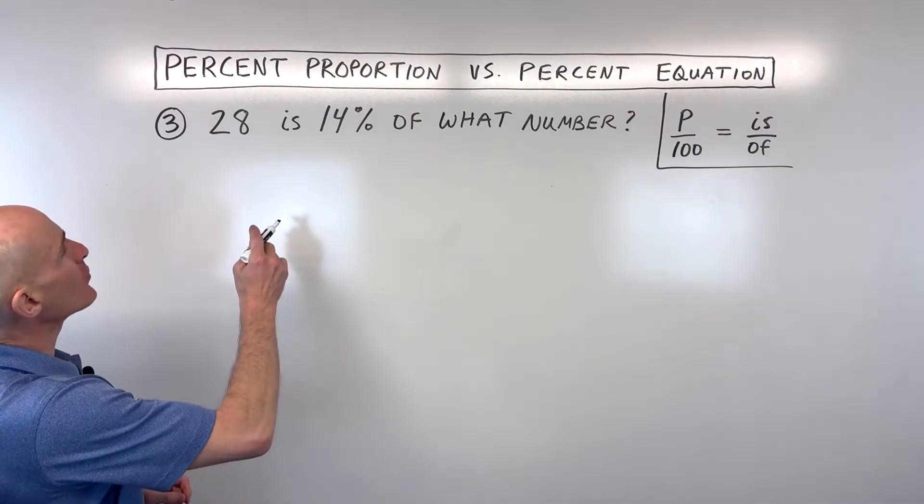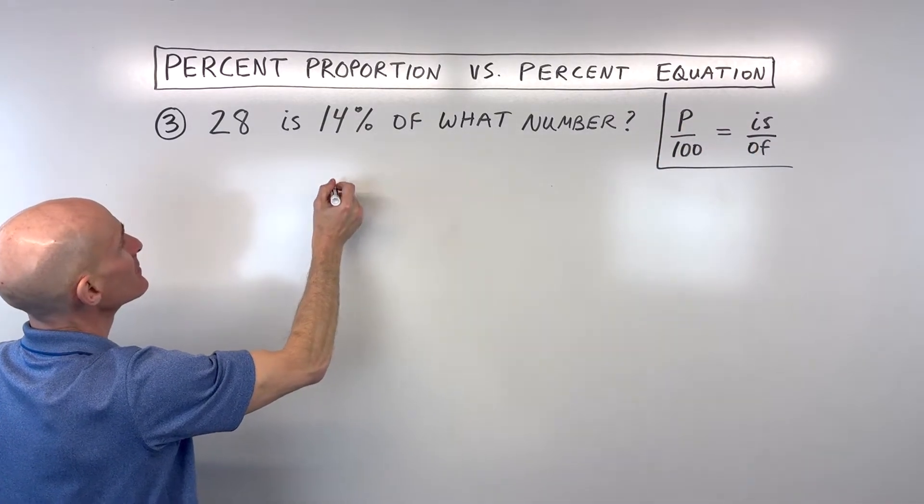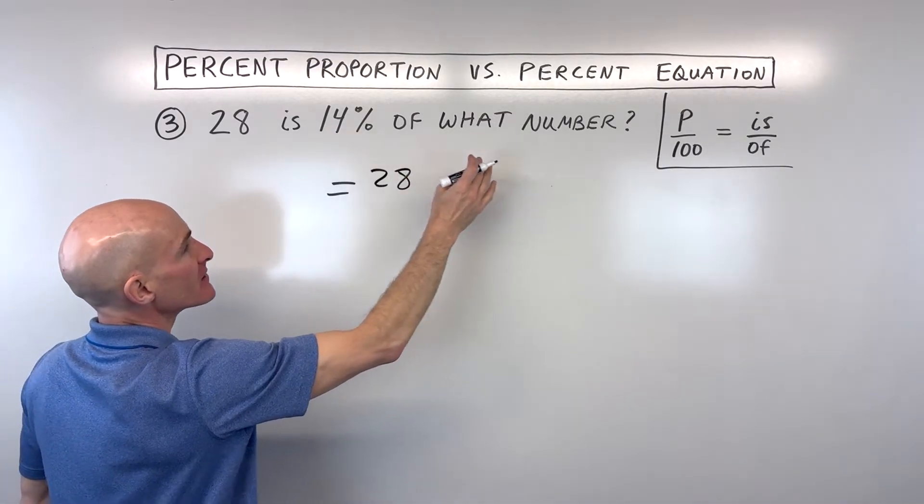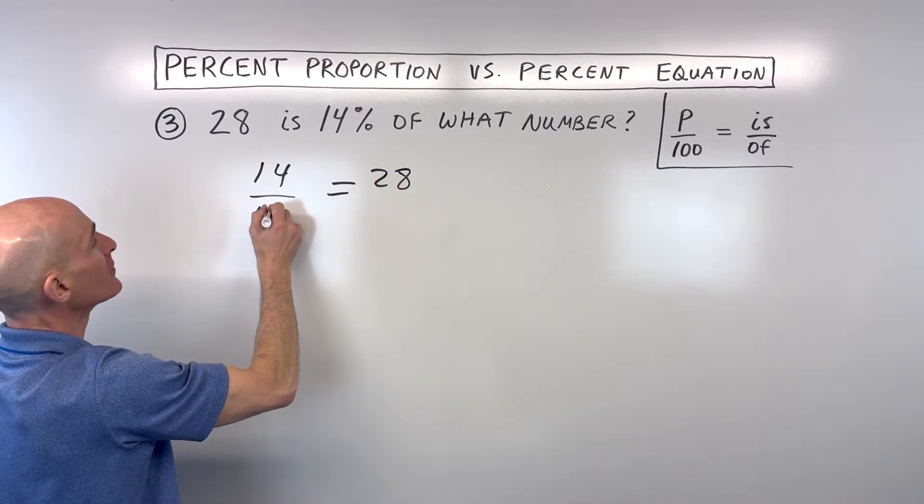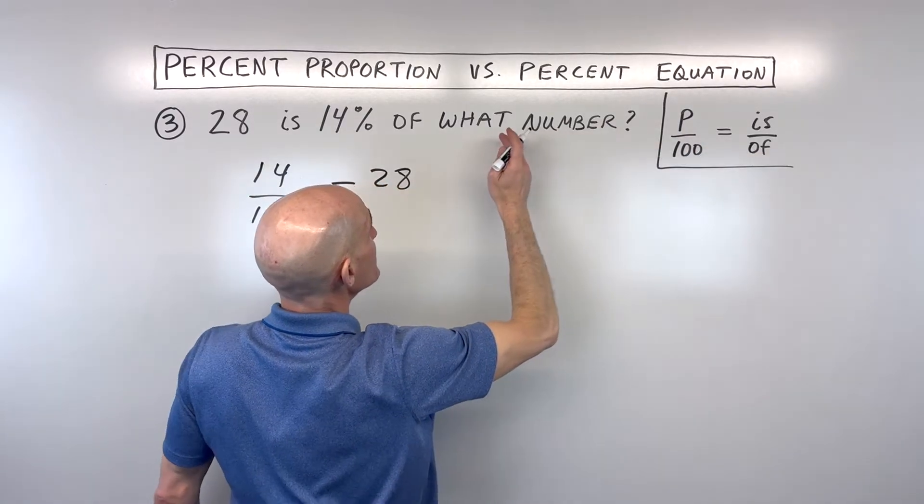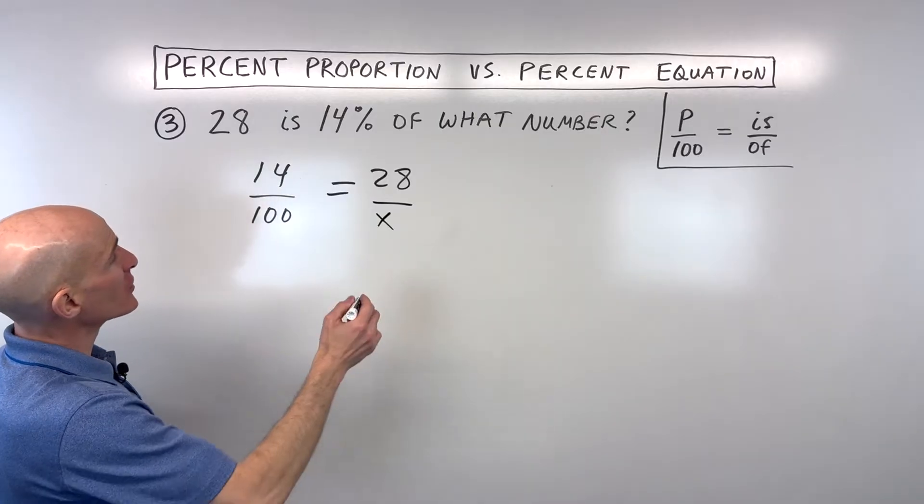Here we have 28 is, that's the numerator here, is 14%, that's our percent, our part over 100, so 14 over 100, of what number? We don't know what the 'of' is. Of what number? So that's going to be our variable x. So now we're going to cross multiply.